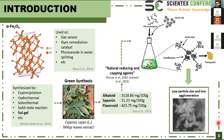Here, green synthesis utilizing biological organisms such as bacteria, yeast, fungi, algae, and plants is safe for the environment. In this research, we use Cajanus cajan leaf extract since it contains good secondary metabolites such as alkaloid, saponin, and flavonoid. These secondary metabolites provide natural reducing and capping agents.